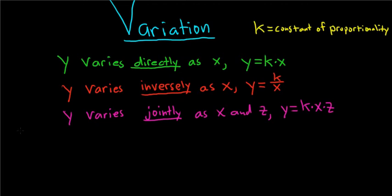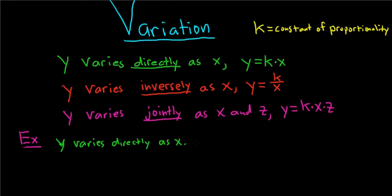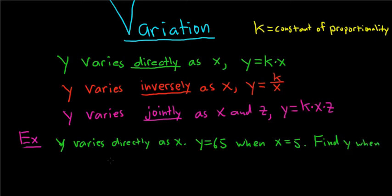Let's do one simple example. Y varies directly as X. We're also told that Y is equal to 65 when X is equal to 5. The question is to find Y when X is equal to 12.